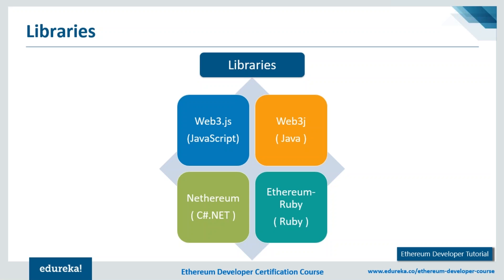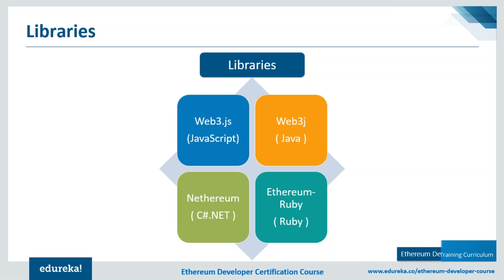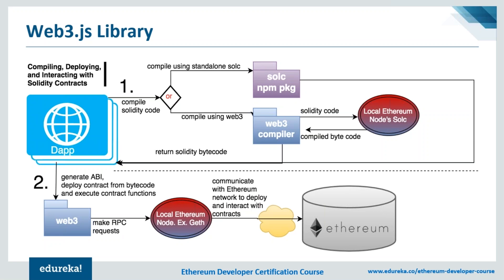Libraries are super useful for building an app interface. You need libraries to help you interact with the blockchain. There are several libraries: web3.js (a JavaScript library), web3.java (a Web3 Java Ethereum decentralized application API), Nethereum, and Ethereum Ruby. Out of all these, web3.js is the go-to option. What web3.js does is take your smart contract code, convert it into bytecode the Ethereum Virtual Machine can understand and compile, without requiring you to explicitly code all that yourself.